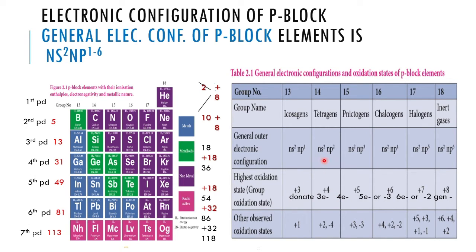For the carbon family (Group 14), the outermost shell has 4 electrons, giving possible oxidation states of +4, +2, or -4. For the nitrogen family (Group 15), with 5 outermost electrons, it accepts 3 electrons for -3 oxidation state, or donates 3 electrons for +3, or 5 electrons for +5. The ns² electrons becoming inactive is called the inert pair effect.